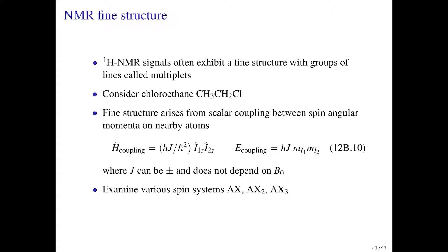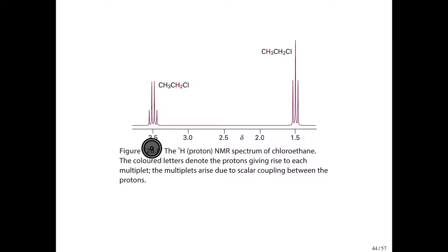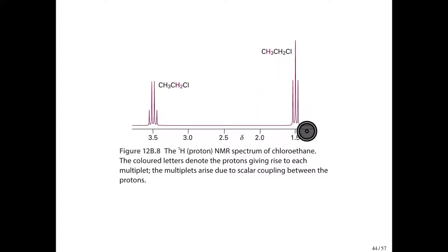We'll consider the case of chloroethane as an example. Instead of seeing just two peaks in chloroethane, what you actually see are a pair of multiplets. The methylene group, which has a significantly larger chemical shift due to the electronegative chlorine atom pulling electron density away, appears as a quartet — four peaks. The methyl group at the end of the molecule, at a smaller chemical shift, appears as a triplet.